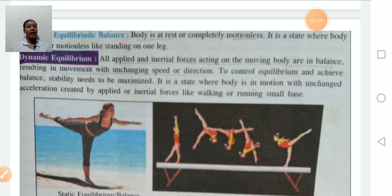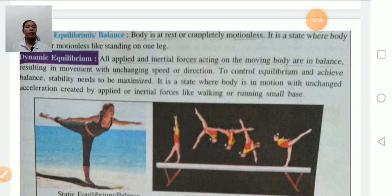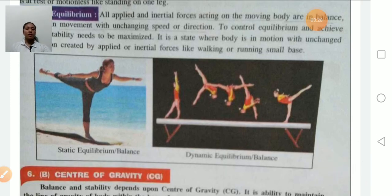To control equilibrium and achieve balance, stability needs to be maximized. Dynamic equilibrium is a state where the body is in motion with unchanged acceleration created by the applied and internal forces, like walking or running on a small base. Applied and internal forces on a moving body are balanced, therefore there is unchanging speed or direction — this is dynamic equilibrium.